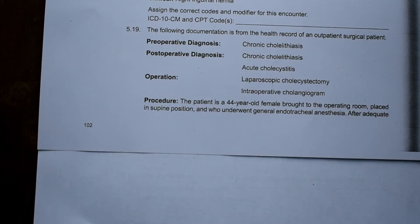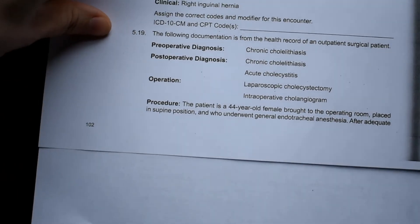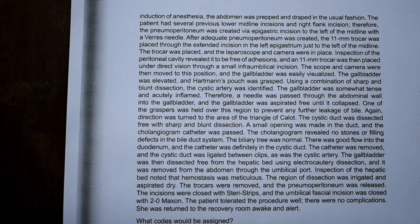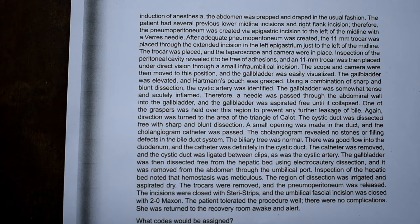The procedure says the patient is a 44-year-old female brought to the operating room, placed in supine position, who underwent general endotracheal anesthesia. After adequate induction of anesthesia the abdomen was prepped and draped in the usual fashion. The patient had several previous lower midline incisions and a right flank incision. Therefore the pneumoperitoneum was created via the epigastric incision to the left of the midline with a Veress needle.